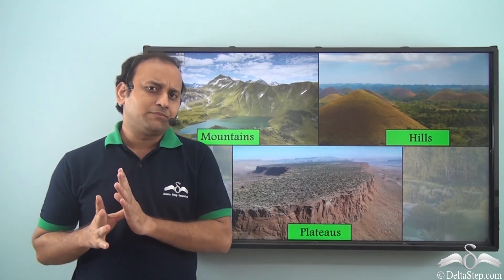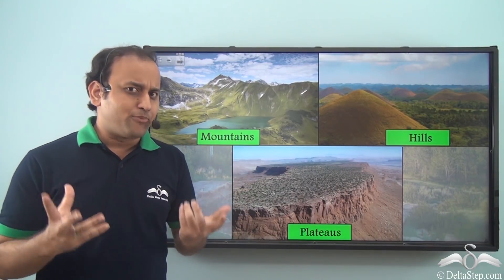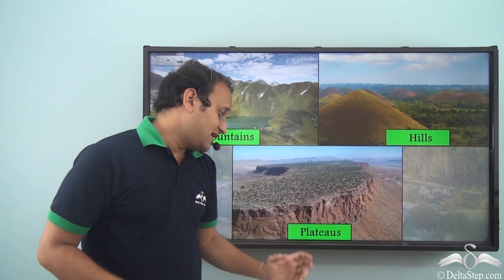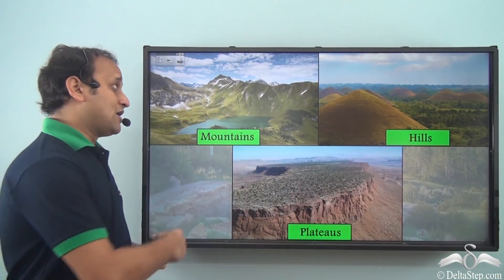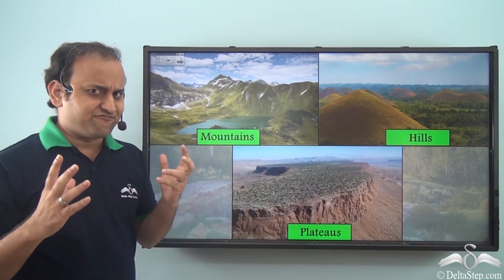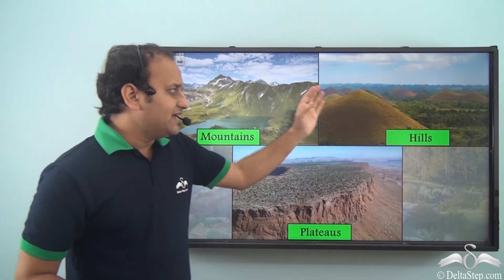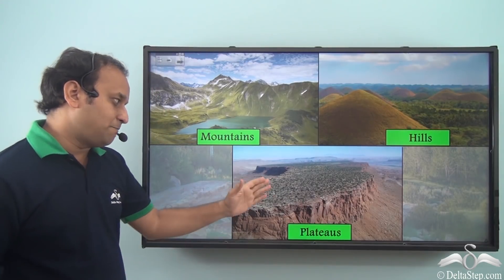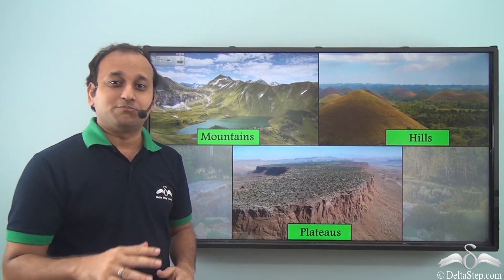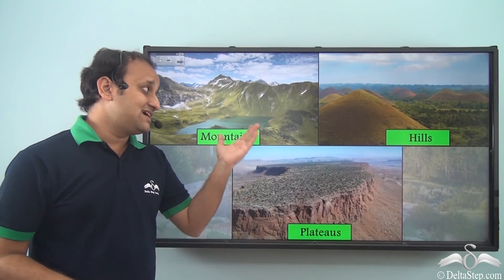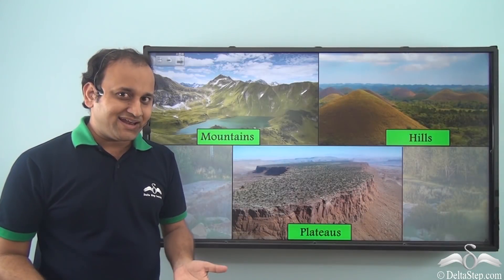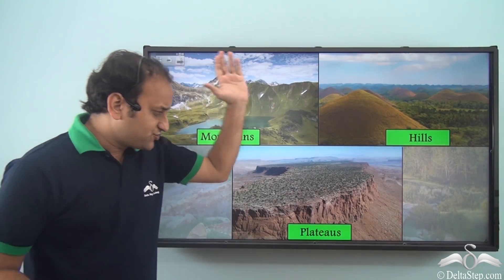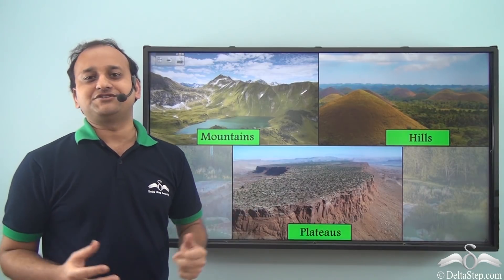Today you learnt about three very important types of highlands: mountains, hills and plateaus. Mountains are very high and very steep, while hills are much smaller than mountains but look like mountains. Plateaus have a flat top just like a table top. We know these are highlands by comparing them with the sea level. These are the three important types of highlands on our planet Earth.